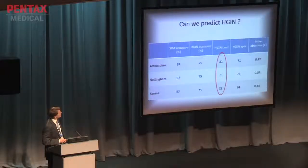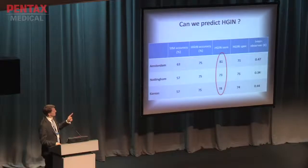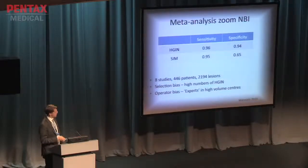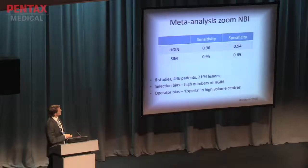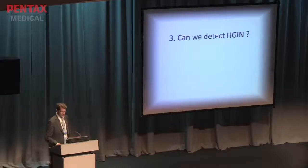All these studies used still images rather than videos. If you use videos, the results are less good — sensitivities drop to between 75% and 80%, still using magnification endoscopy and MBI. Looking at all the studies together, sensitivities are superb, but there's selection bias because half the patients have high-grade or more, and operator bias because they're all experts. So in the right conditions we may be able to detect it, but that doesn't apply to many of us.